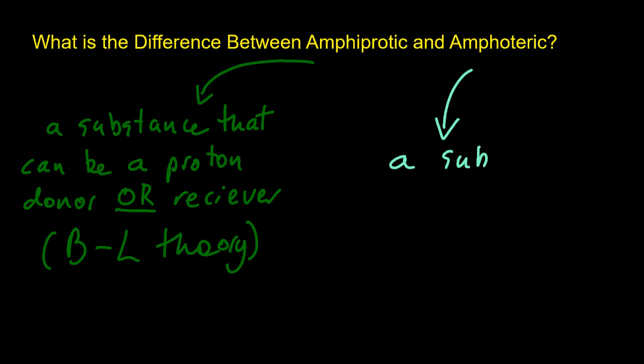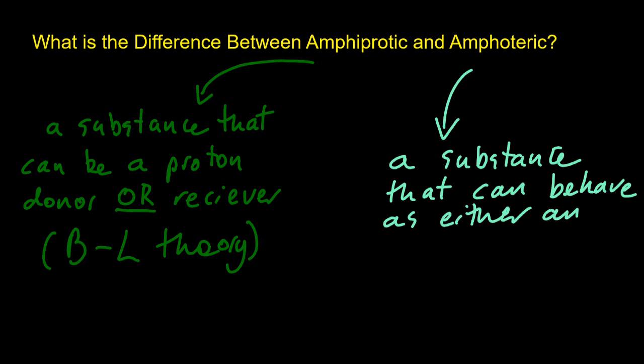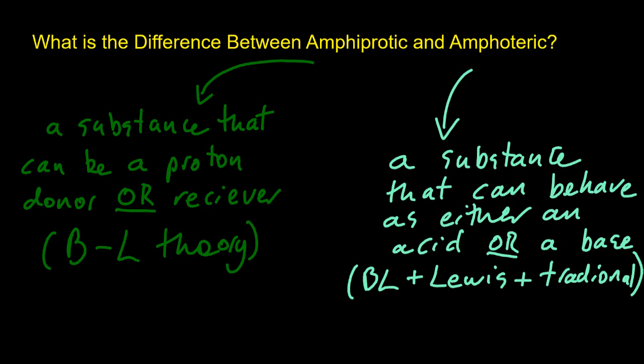Amphoteric is a substance that can behave as either an acid or a base. There are three types of acids and bases: Bronsted-Lowry, that's for SL; Lewis, that's HL; and the traditional, where an acid produces H+ (aq) in water and a base makes OH- (aq) in water.